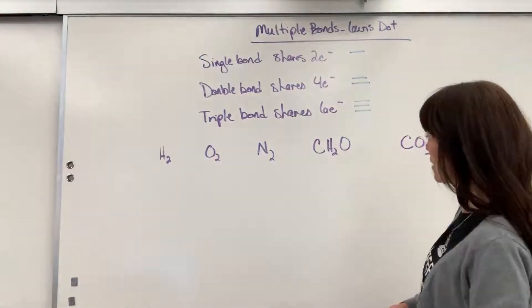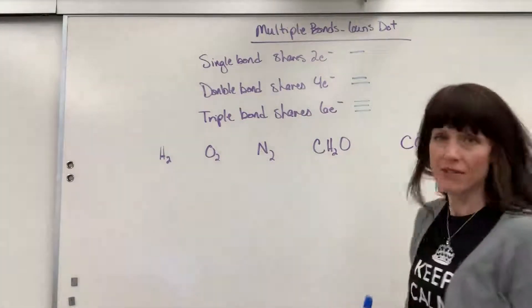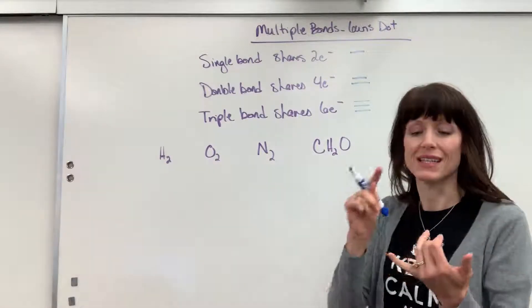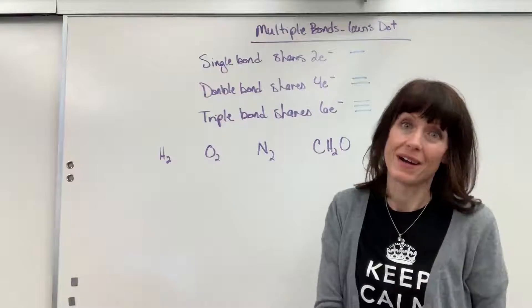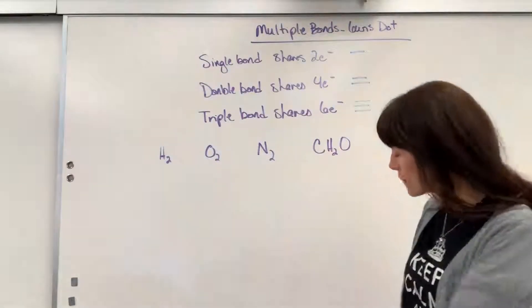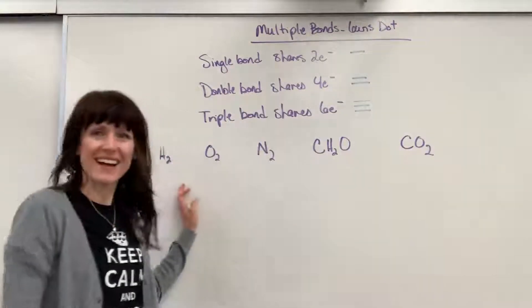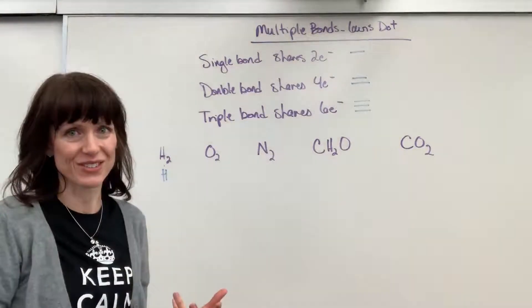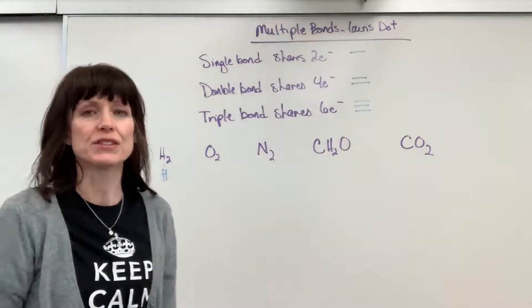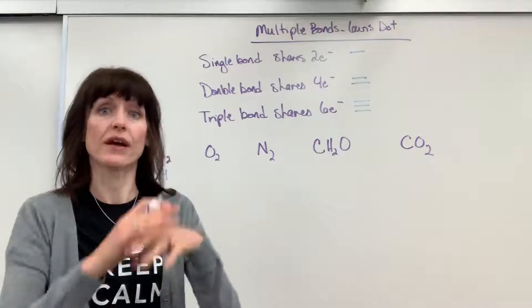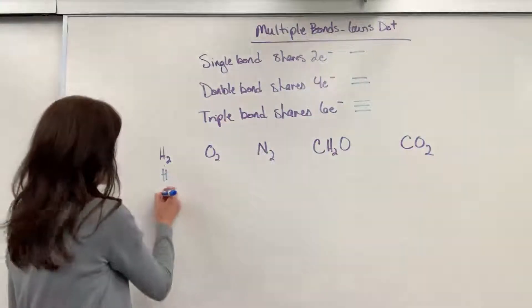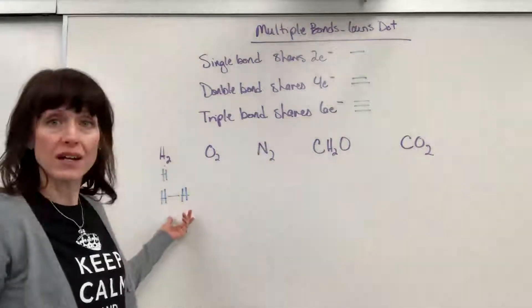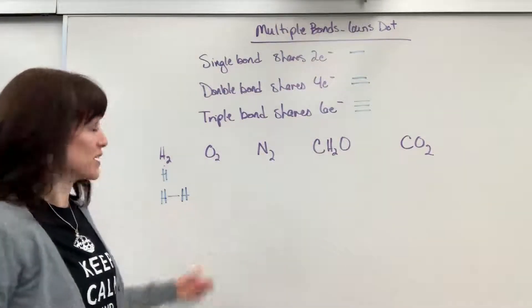I have five examples. We'll start really basic and build from there so you can see the single, double, and triple bond a couple of different ways. Let's start with hydrogen. Hydrogen has one valence electron and only needs two electrons for a full shell. So one hydrogen shares an electron with another hydrogen, giving us H₂, our diatomic element.